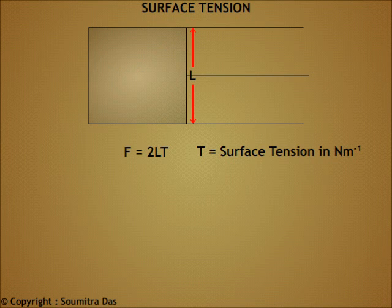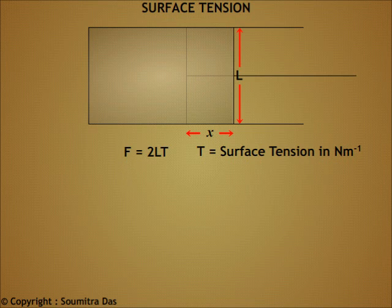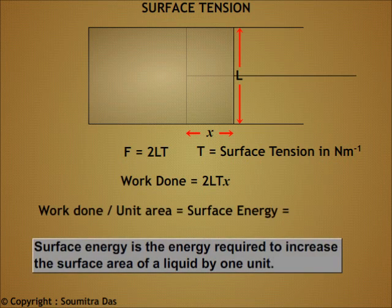Now let us drag the sliding wire by a length x against this force. Work done will be 2LTx. The work done per unit area is 2LTx divided by 2Lx, which is the area of the two surfaces of the film. This is the surface energy and is numerically equal to the surface tension.